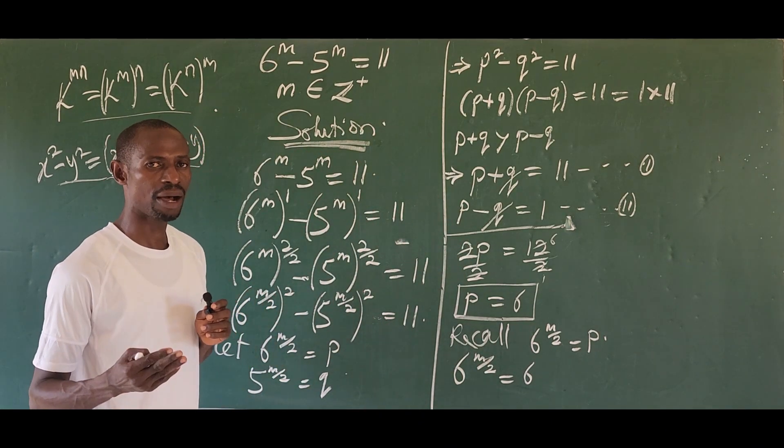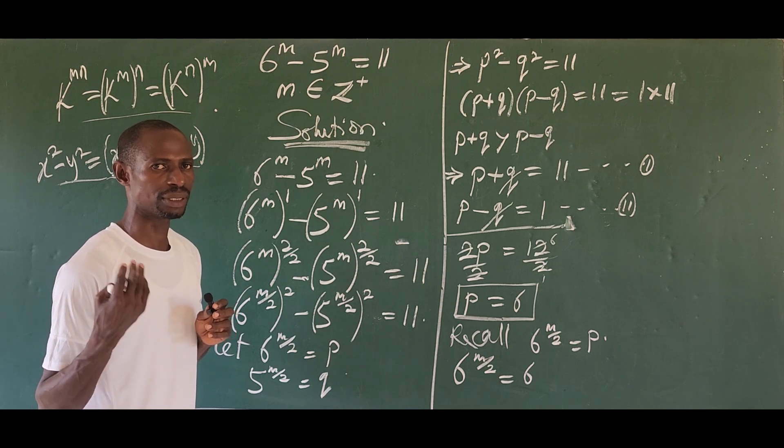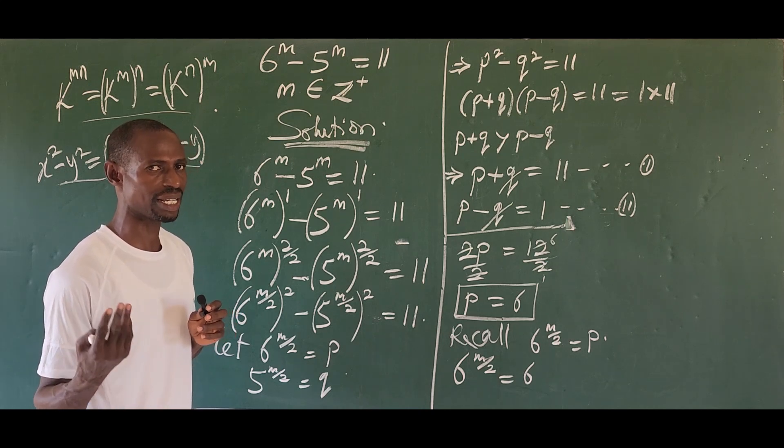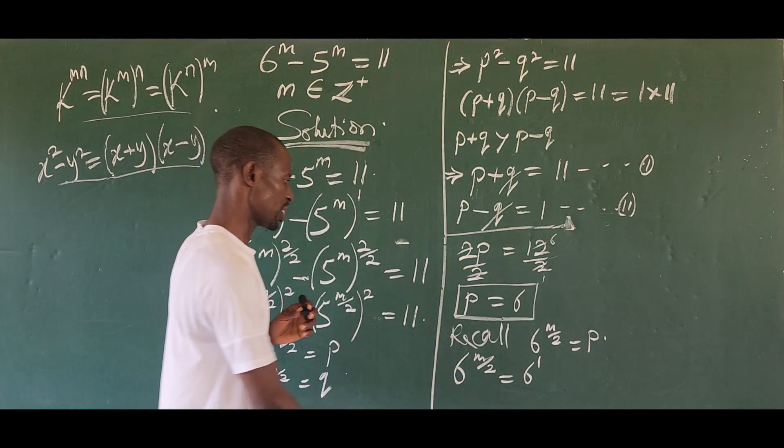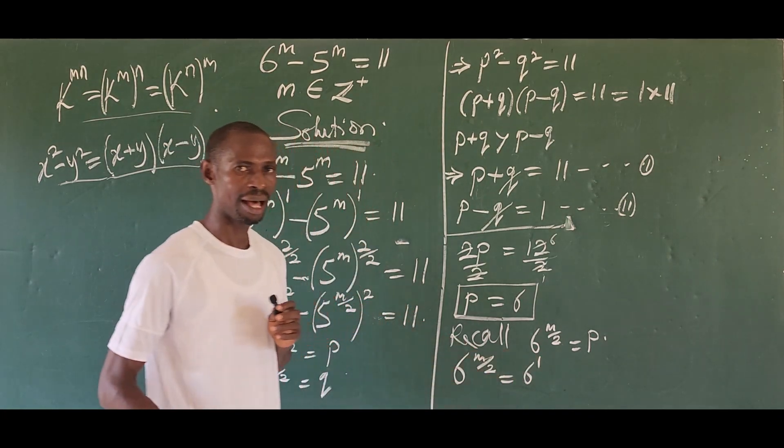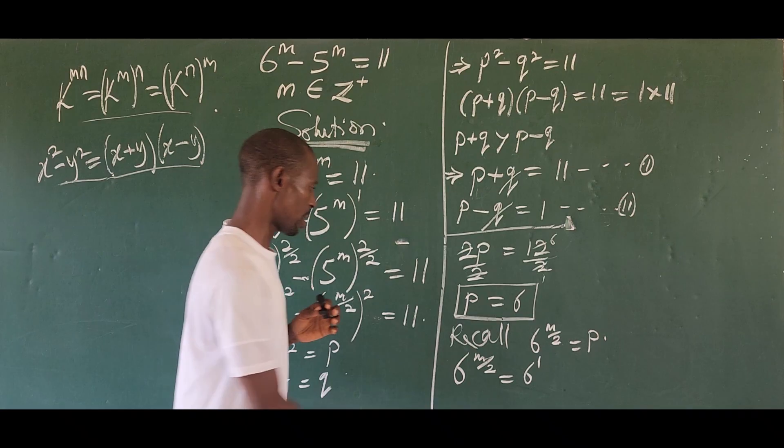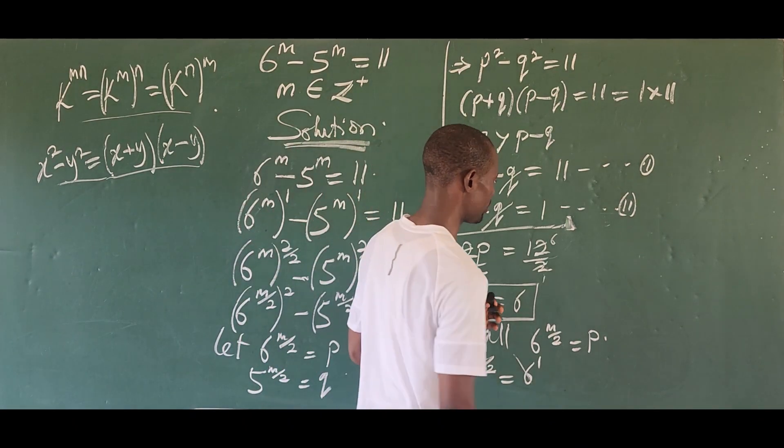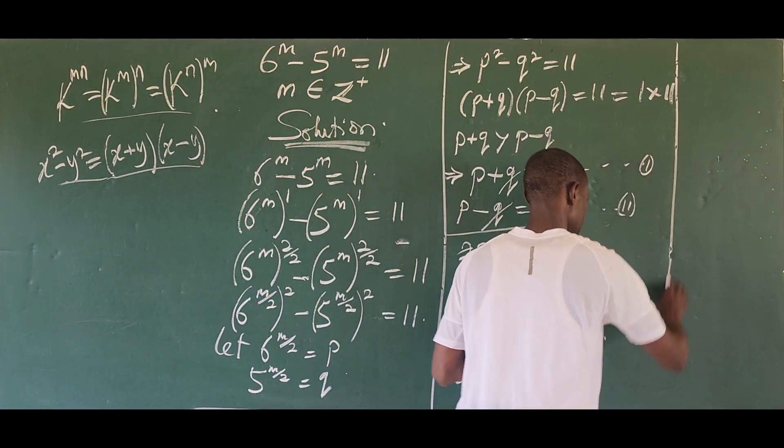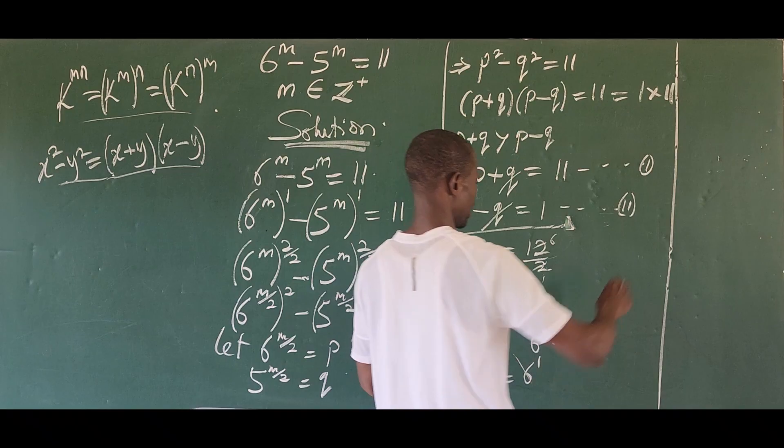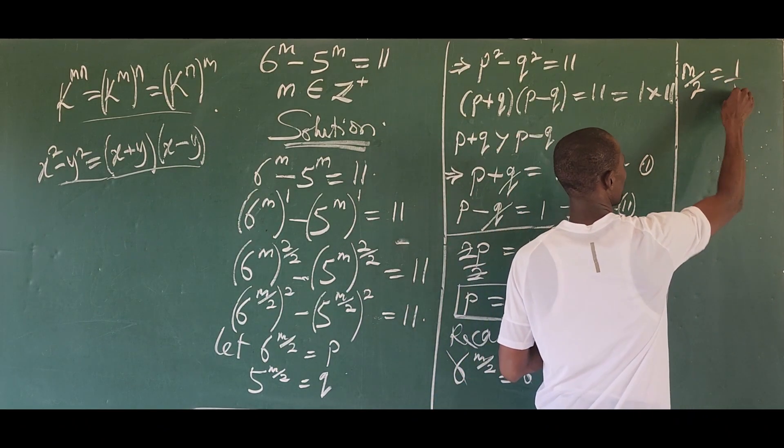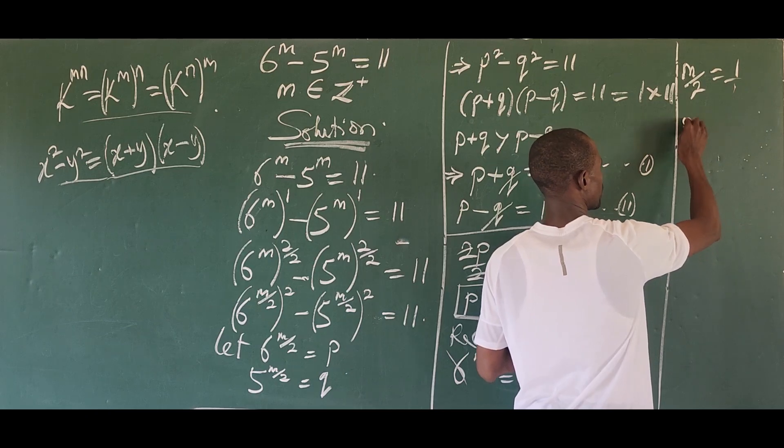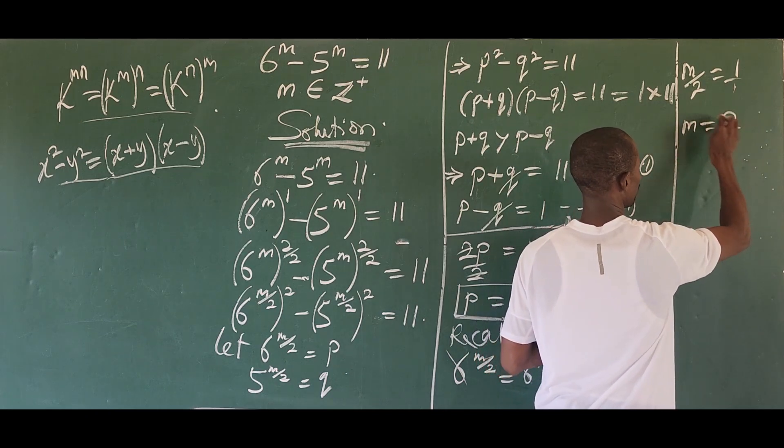Now the base number on the left hand side is same to that of the base number on the right hand side. And mind you, 6 could be written as 6 to the power of 1. So since the bases are the same and they are greater than 0, then what happens is this leaves the system. And if this leaves the system, then we can equate the exponent. So we are going to have our m all over 2 is equal to 1. Multiply both sides by 2. This will give us m is equal to 2. So m equal to 2 is the solution to this, as I said earlier.